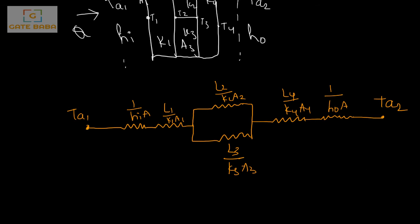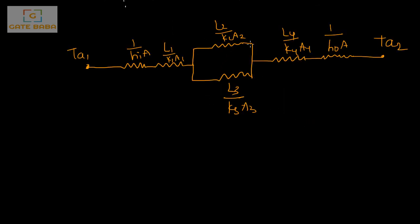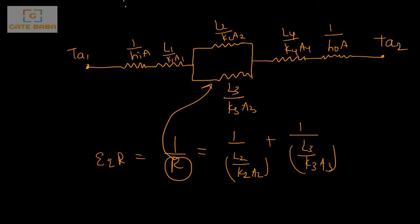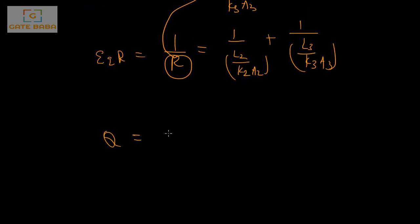For the parallel section, find the equivalent resistance first: 1/R_eq = 1/(L2/(K2·A2)) + 1/(L3/(K3·A3)). Then the total resistance is the series sum: 1/(H_inner·A) + L1/(K1·A1) + R_eq + L4/(K4·A4) + 1/(H_outer·A). The total heat transfer rate is q = (TA1 − TA2) / total resistance. This is the final expression combining both convection and conduction heat transfer.